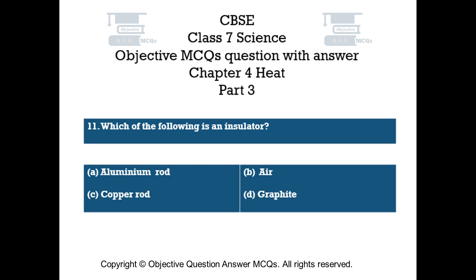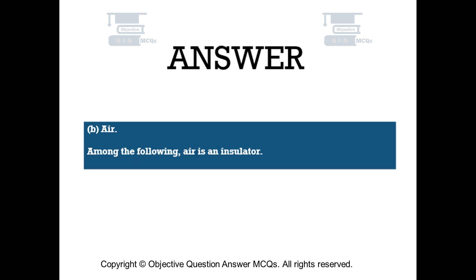Question number 11. Which of the following is an insulator? Option A aluminium rod, Option B air, Option C copper rod, Option D graphite. The right answer is Option B — air. Among the following, air is an insulator.